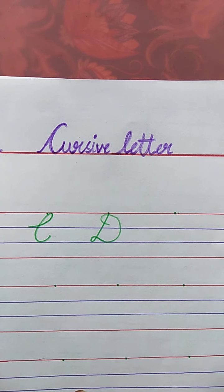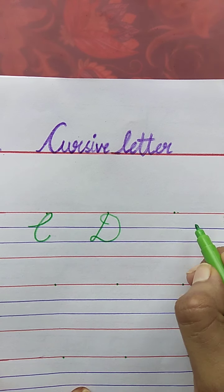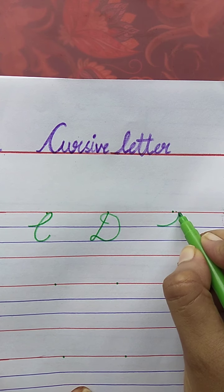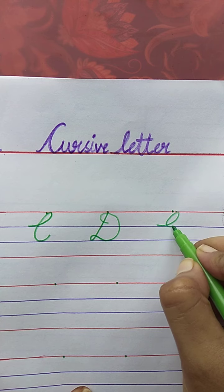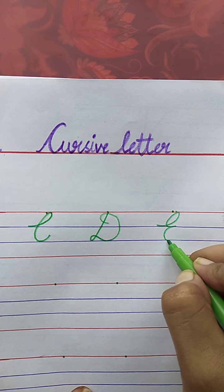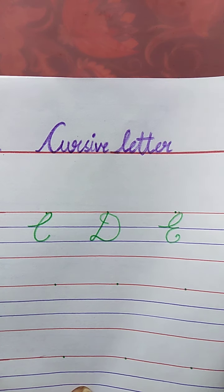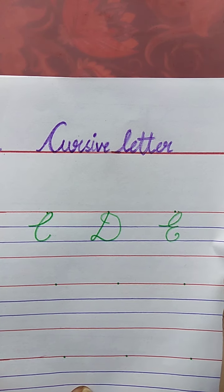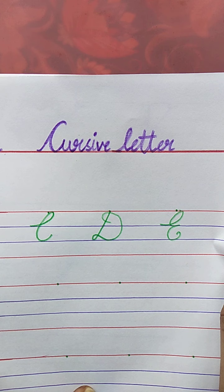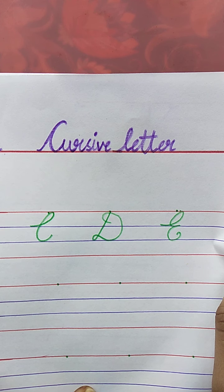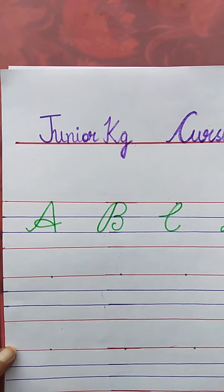E. E for Elephant. Draw a curve, semi-circle, one more semi-circle, and stop here. E for Elephant. The spelling of Elephant is E-L-E-P-H-A-N-T. Elephant.